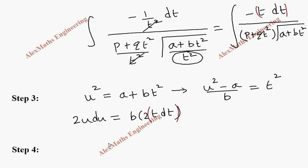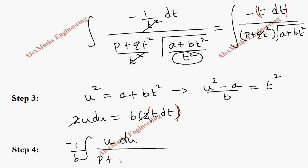Substituting everything in terms of u: minus t dt is replaced, the B constant comes down with the minus sign outside. For P plus Qt², we substitute t² as u² minus A by B. The square root of A plus Bt² becomes u, so we can cancel u, simplifying the integral.